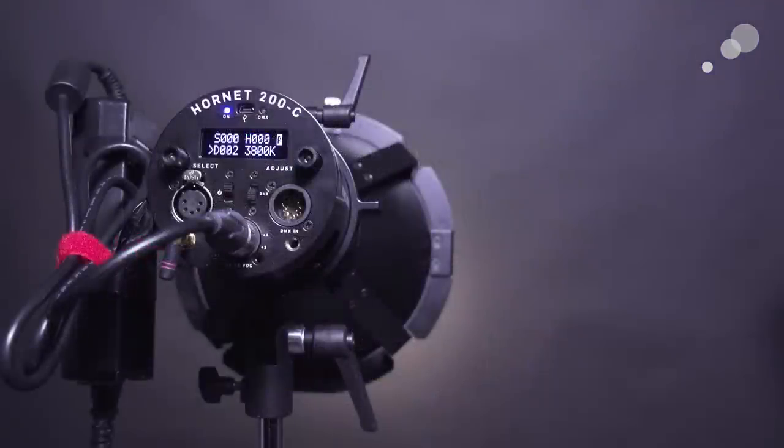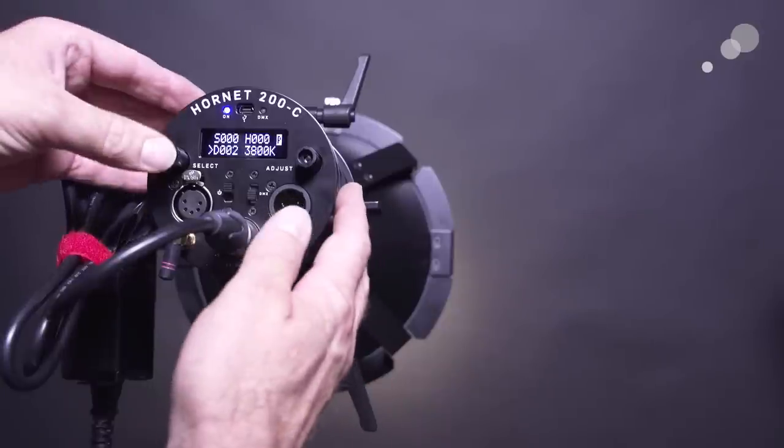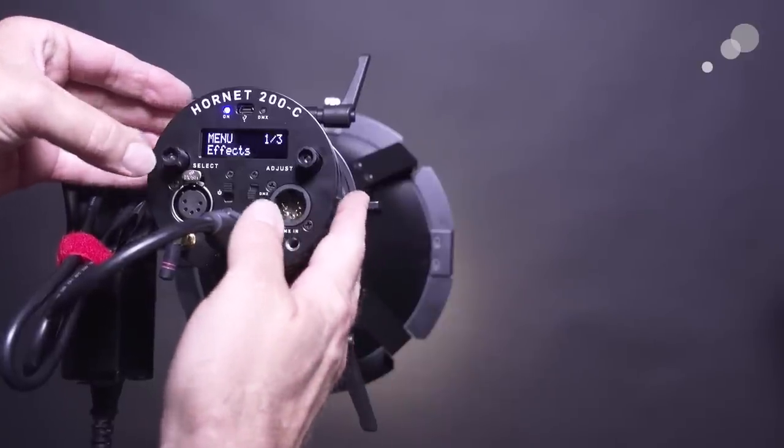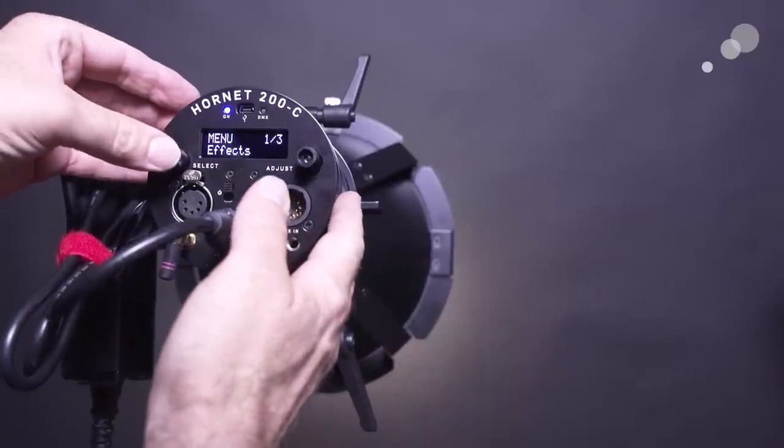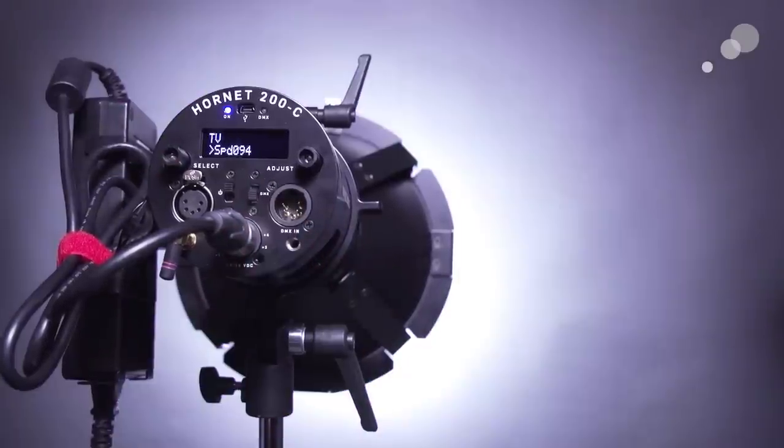So I've changed composition here slightly of the menus and that's because I want to show you the newest addition to the 200C. Out of the box it now has effects inside of it and to get to those you are going to go to the selector knob and double click and click again and now you can see that we have these different effects.